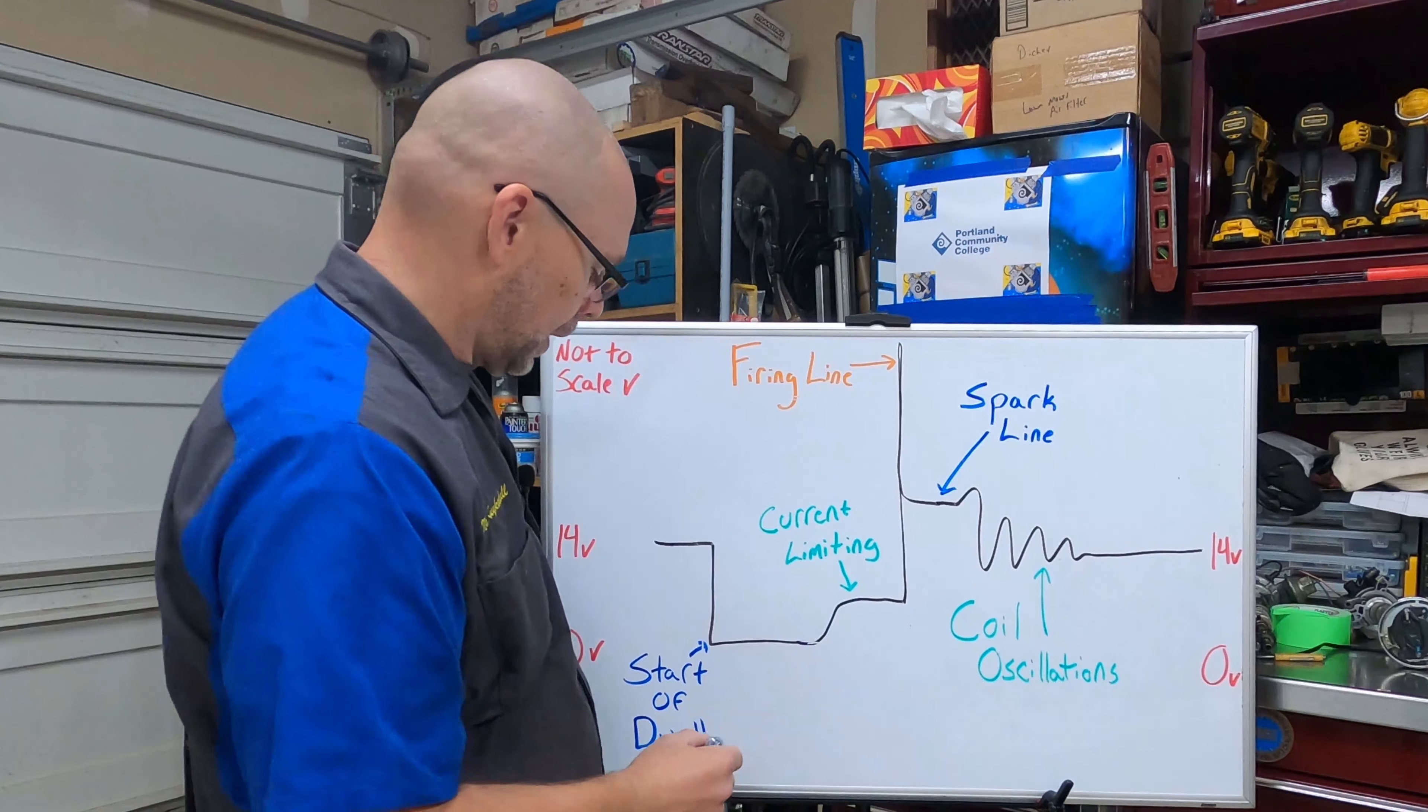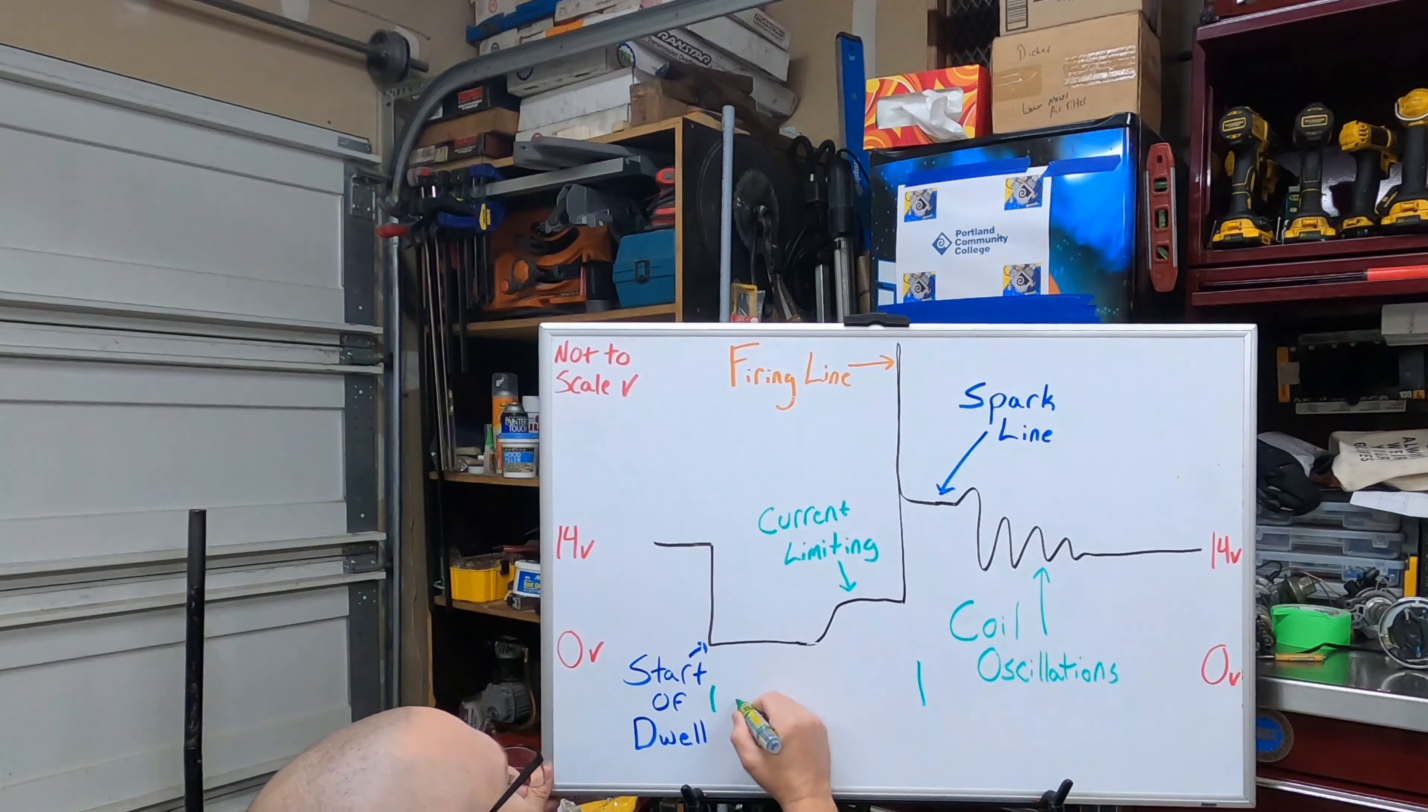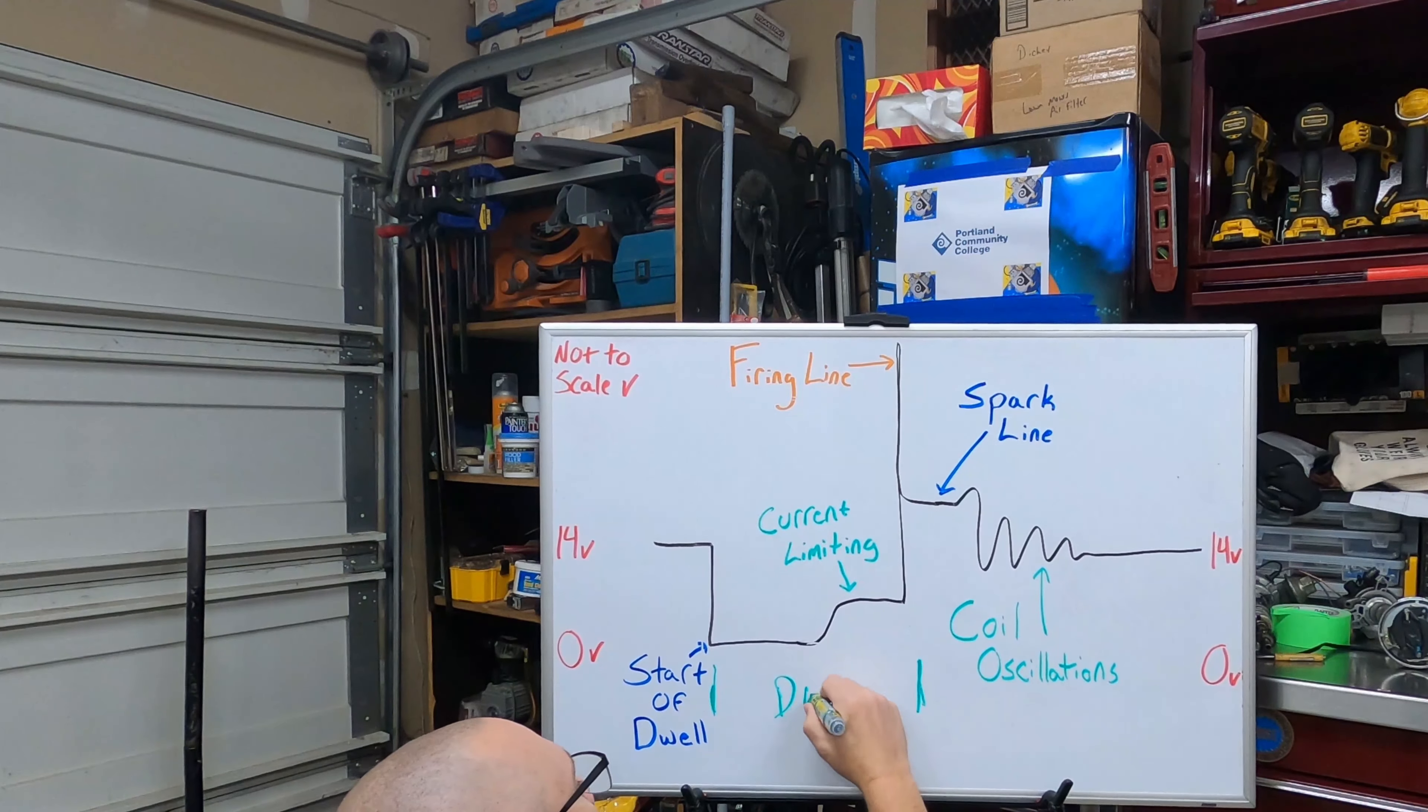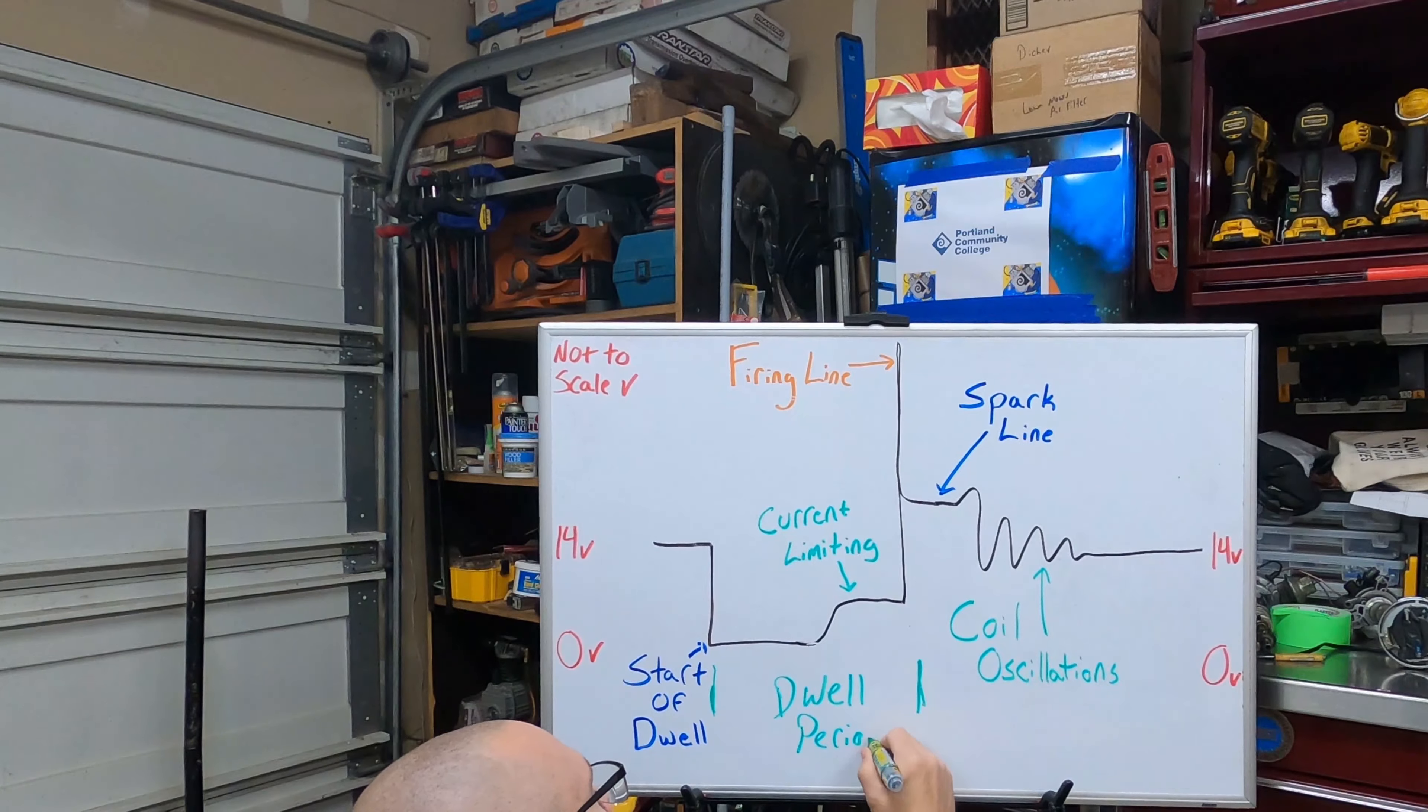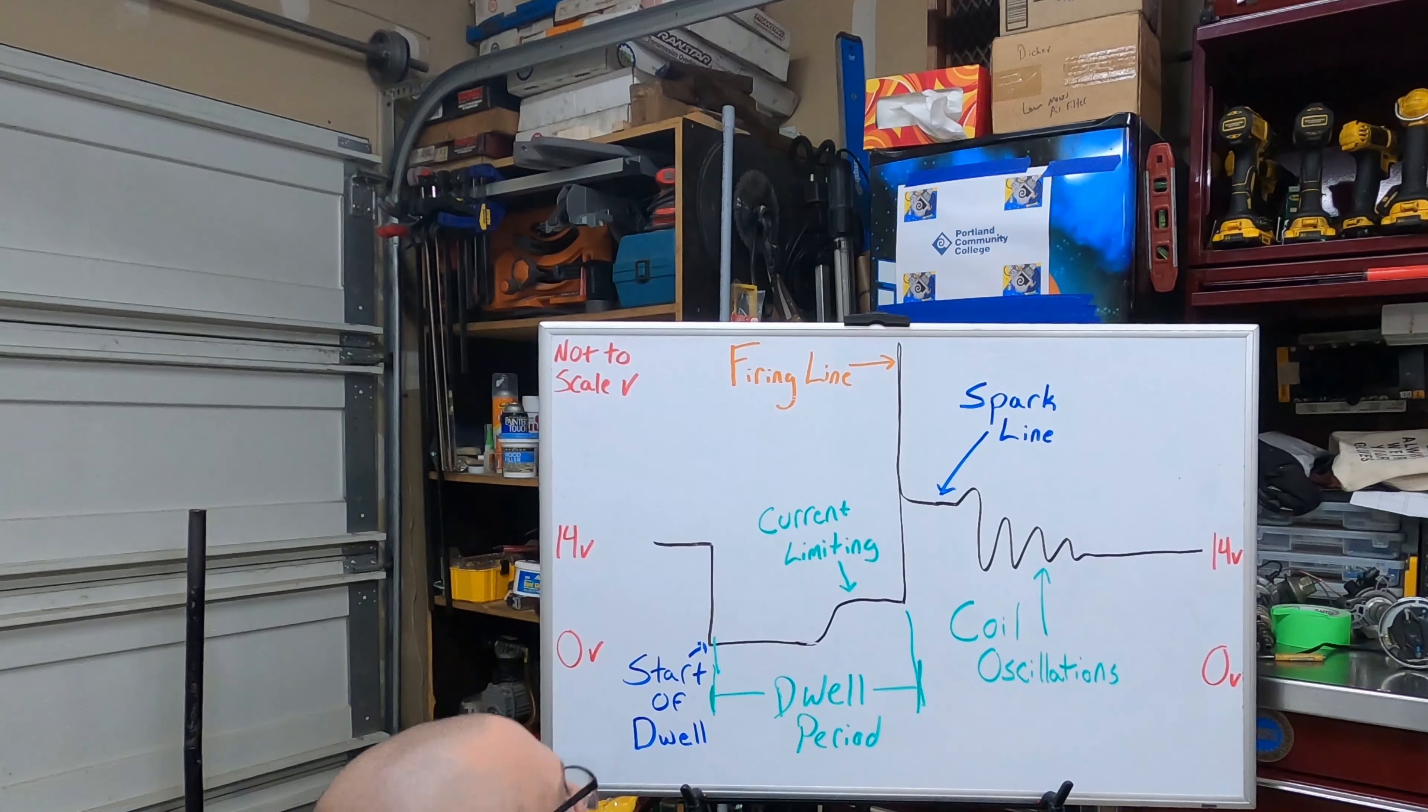Realistically we've built a magnetic field and now we're going to flow just enough current to make sure that field maintains its optimal strength till we fire this thing off. Next, the end of dwell right here, I didn't mark that, but the firing line represents the end of dwell. So this period right in here, between here and here, we term this time frame dwell or the dwell period.